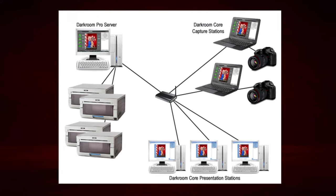This diagram shows some of the things you can do with core and pro combined, using pro as a server for the images and core as a client station. In the top left corner you'll see darkroom pro server — a representation of a computer running darkroom pro set up as a server. In the top right corner you'll see two laptops and two cameras tethered to those laptops, representing shooting stations. In the bottom right corner you'll see darkroom core presentation stations — viewing stations where after photos are captured a customer can go look at them.